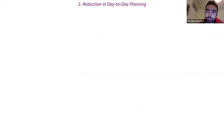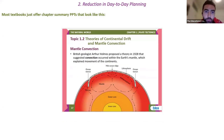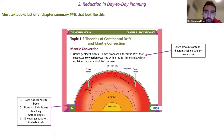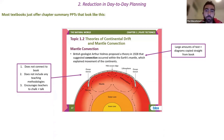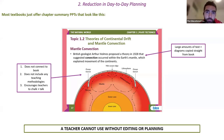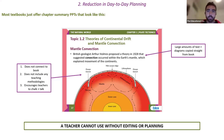The Natural World also reduces day-to-day planning for teachers. Most textbooks just offer chapter summary PowerPoints with large amounts of text and diagrams copied straight from the book. The problem with those is they don't connect to the book content students are engaging with, they don't include any teaching methodologies, and they typically encourage chalk-and-talk. Most importantly, a teacher cannot use these PowerPoints without significant editing — you can't just download it and walk into the lesson.